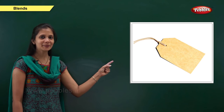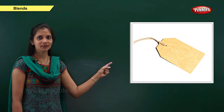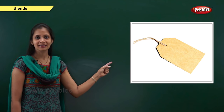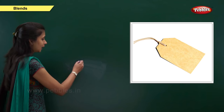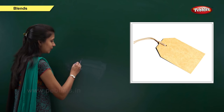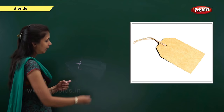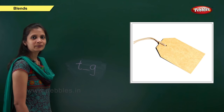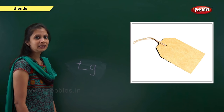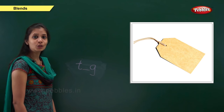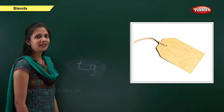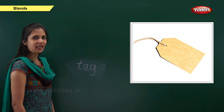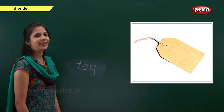Next one. Which picture is this? Yes, it is tag. What is the sound of it? It is t, a, g. When the beginning sound is 't', the letter is t. When the ending sound is 'g', the letter is g. What about the middle sound? It is 'a'. The letter is a. Vowel a. So: t, a, g — tag.